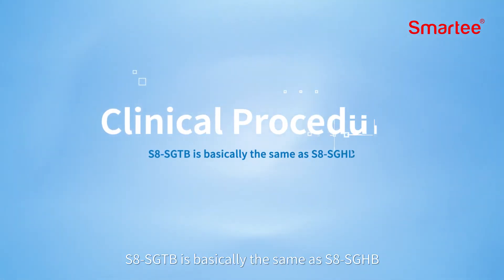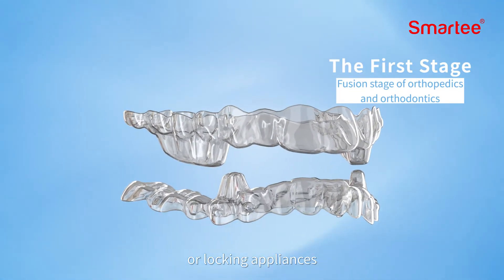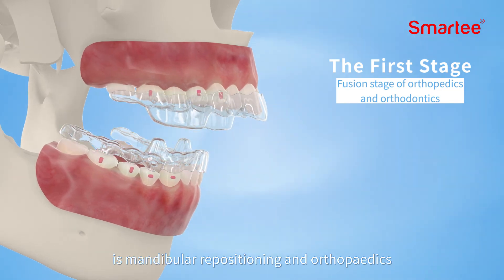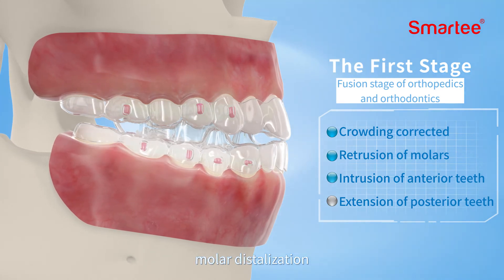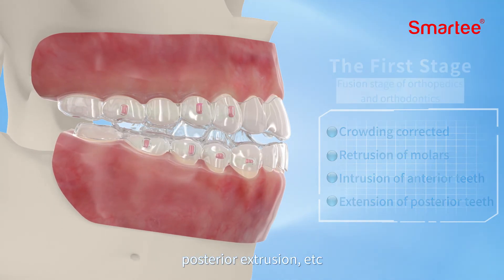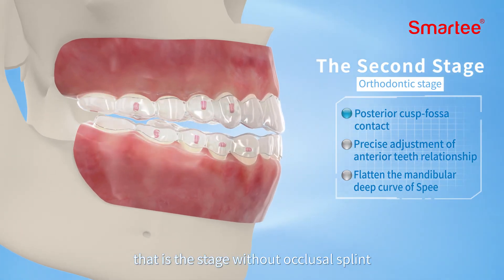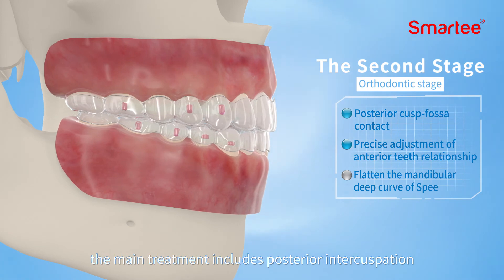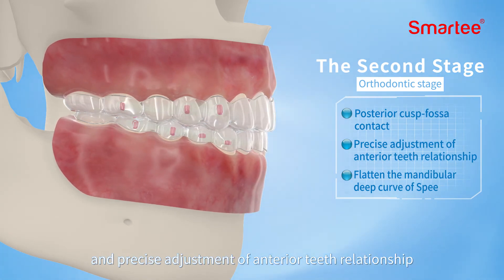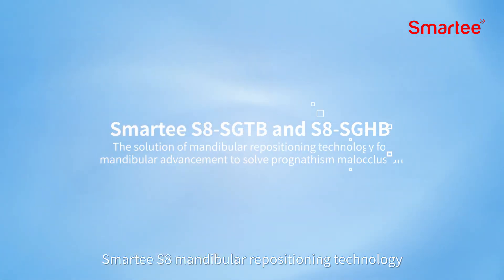In terms of clinical procedures, S8 SGTB and S8 SGHP are basically the same. The first stage — with occlusal splint or locking appliances — focuses on mandibular repositioning in orthopedics, while simultaneously carrying out orthodontic treatments such as crowding correction, molar distalization, anterior intrusion, and posterior extrusion. The second stage — without occlusal splint or locking appliances — focuses on posterior intercuspation and precise adjustment of the anterior teeth relationship to further flatten the deep mandibular curve of Spee.